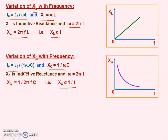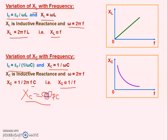An important point: for DC, frequency f = 0, so XC = 1/(2πfC) becomes infinite. If XC is infinite, current cannot pass through the capacitor circuit. This means the capacitor blocks DC. As explained earlier, DC can never pass through a capacitor.